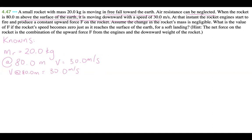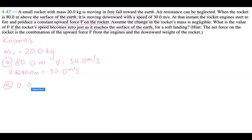The rocket engines produce a constant upward force F — they don't give us a value, so we're not writing that down yet. What is the value of F? The rocket's speed becomes zero just as it touches the surface of the Earth, so at zero meters, V equals zero meters per second. That's what we're solving for: F.